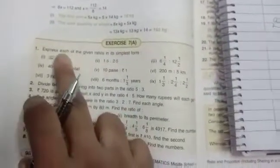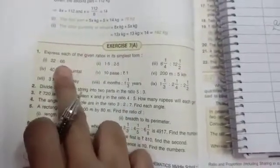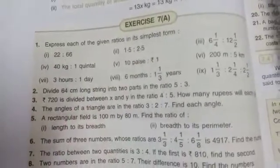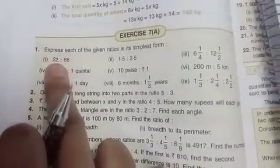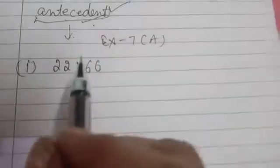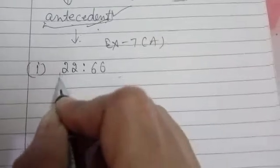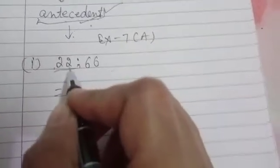If we come to question number 1, question number 1 is easy. I will do the statement sums. First one is 22 ratio 66. How we have to write - whatever is written first is the antecedent.